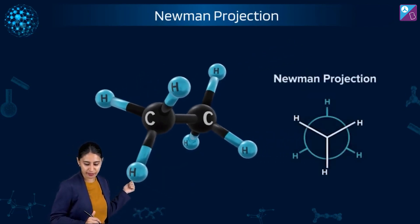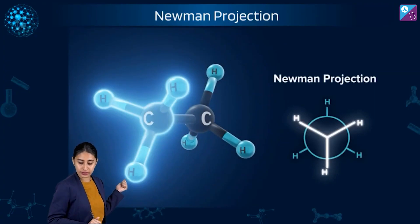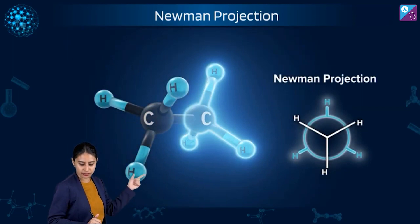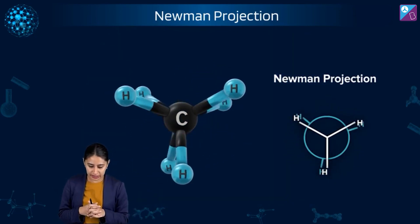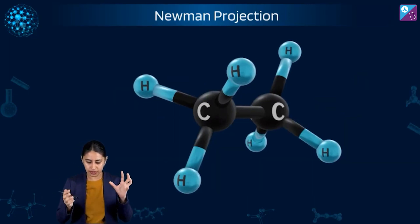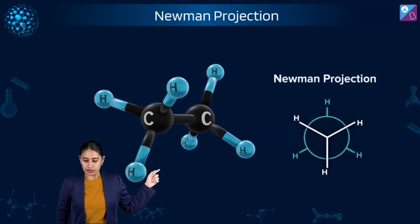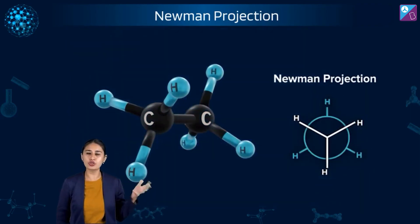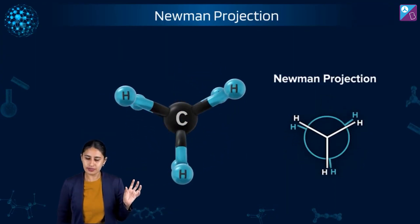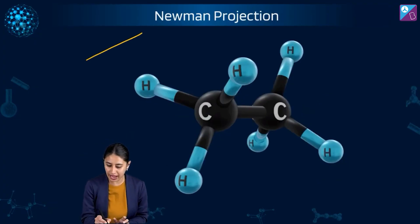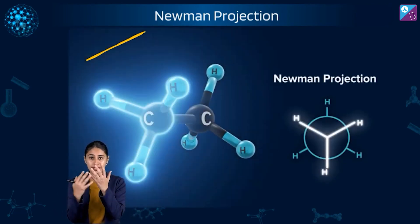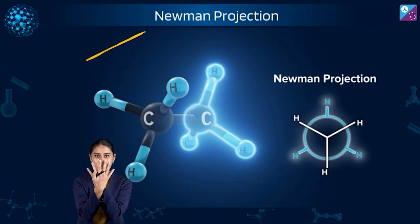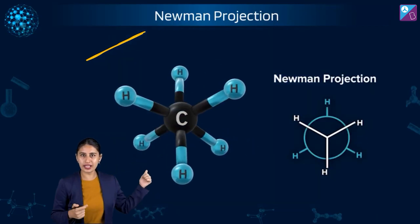From sawhorse, how can we understand Newman? The first carbon and its three hydrogens, then the second carbon and its three hydrogens — we are looking at it head-on. We are looking at the sawhorse not as a slant line now, but head-on from the first carbon, so the second carbon goes to the back of the first carbon.